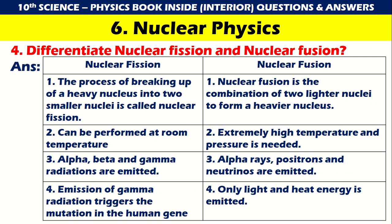Differentiate nuclear fission and nuclear fusion. Nuclear fission: the process of breaking up of a heavy nucleus into two smaller nuclei; alpha, beta and gamma radiations are emitted; emission of gamma radiation can trigger mutation in human genes. Nuclear fusion: the combination of two lighter nuclei to form a heavier nucleus; requires extremely high temperature and pressure; only light and heat energy is emitted.